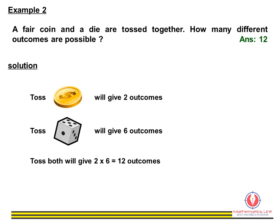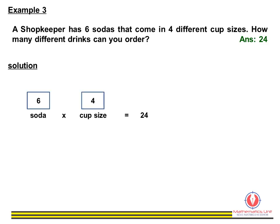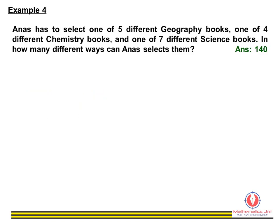Example 3: a shop sells six types of sodas in four cup sizes. The varieties of sodas sold in different cup sizes are six times four equal to twenty-four.